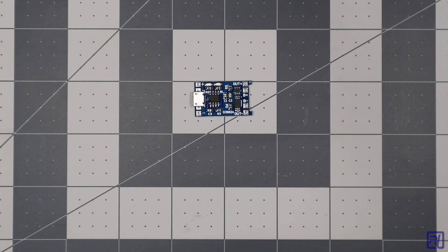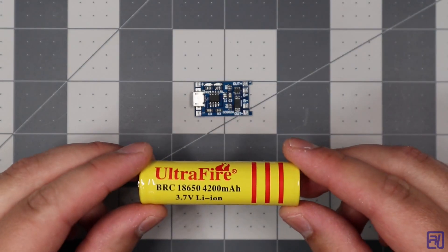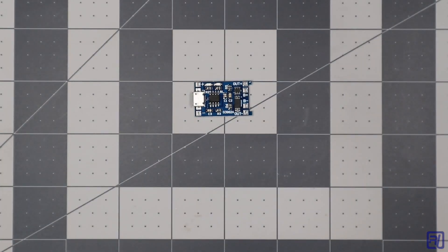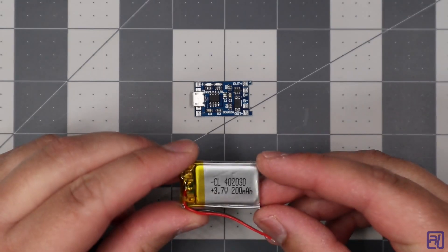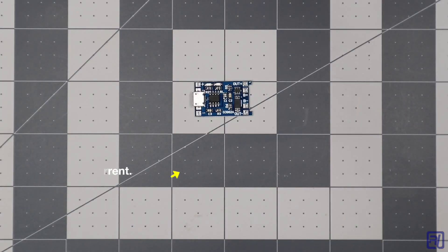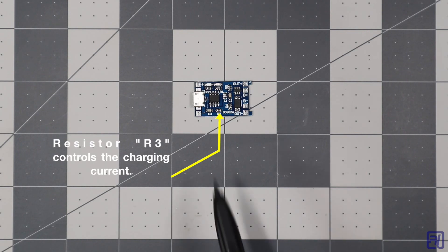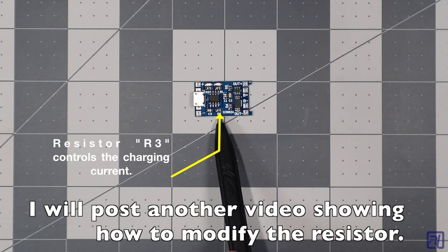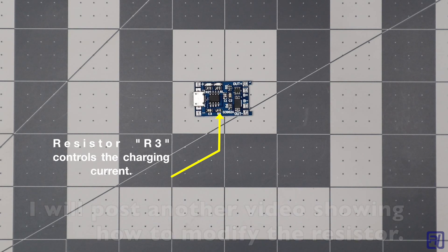The charging current is set to 1 amp, that's perfect if you're using an 18650 battery, that's a little too high if you want to use a smaller lithium polymer battery with a lower capacity. The good thing about these boards is that you can change the charging current by swapping out this resistor right here. I'll put a link to the datasheet below so you can see what resistor you need to use for your particular battery.